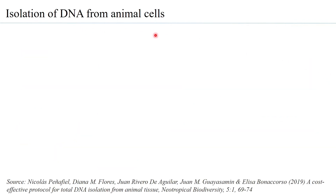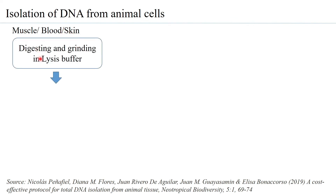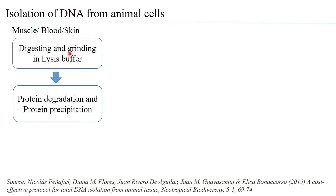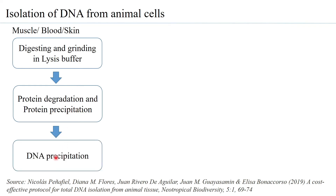Isolation of DNA from animal cells is simpler than from plant cells because animal cells do not have a cell wall, so the cell wall disruption step is completely removed. Sources include muscle, liver, blood, and skin. The tissue is digested and ground in a lysis buffer to obtain a cell extract, from which proteins are degraded and precipitated as contaminants before final DNA precipitation.